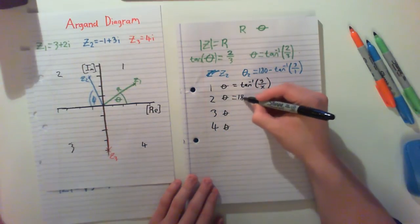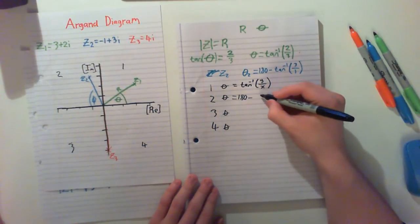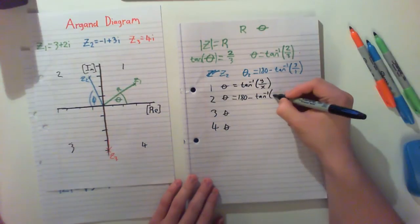For our second part, it's 180 minus this up here, our tan to the minus 1.